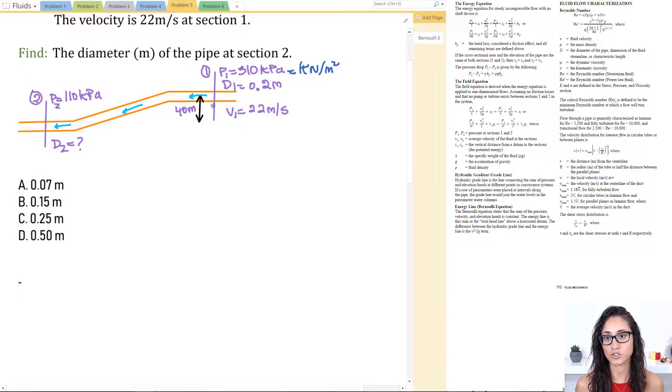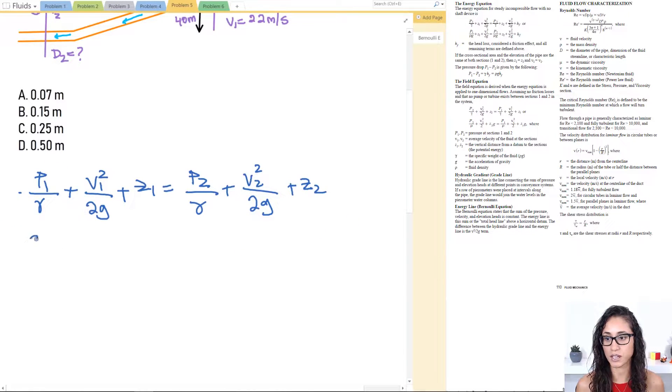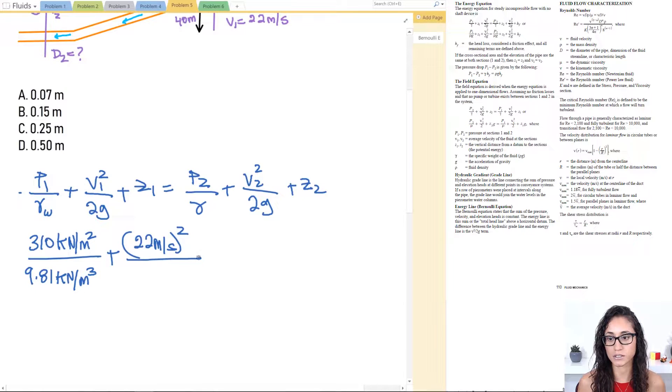Let's start writing the Bernoulli equation. We have P1 over gamma plus V1 squared over 2G plus Z1 equals P2 over gamma plus V2 squared over 2G plus Z2. Let's start plugging in the numbers. P1 was given as 310 kilonewtons per meter squared divided by the unit weight of water, 9.81 kilonewtons per meter cubed, plus V1 is 22.